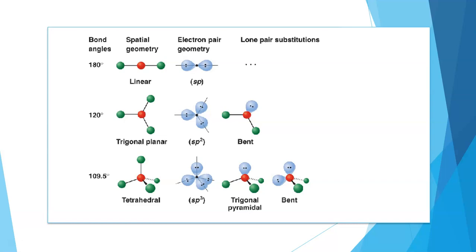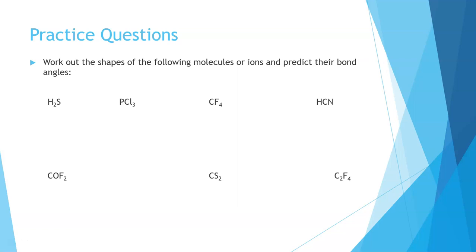In VCE, we don't need to know the actual bond angles, but we do need to predict the shape and geometry around a central atom. We'll do some molecule building and practice next class. For now, pause the video and draw the correct structural formula for the given molecules, getting the shape right. Is it linear, trigonal planar, trigonal pyramidal, or tetrahedral? Look at the central atom and check for non-bonding pairs — if present, they'll push the molecule to a non-linear or non-flat structure.